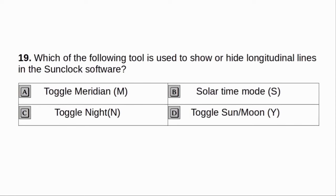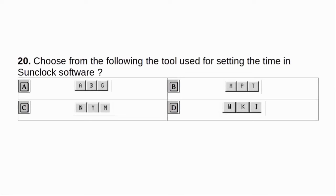Which of the following tools is used to show or hide longitudinal lanes in the SunClock software? A. Toggle Meridian M. B. Solar Time Mode S. C. Toggle Night N. D. Toggle Sun or Moon Y. Answer: A. Toggle Meridian.